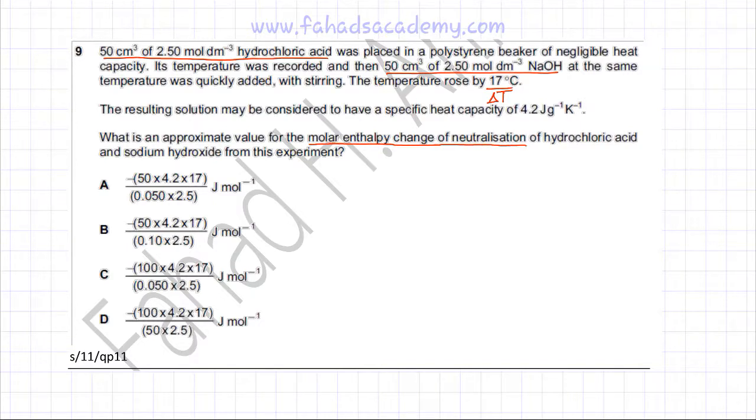So we're going to start off with the first thing which is figuring out what is the energy change in this reaction. The formula is Q equals M times specific heat capacity times delta T which is change in temperature.